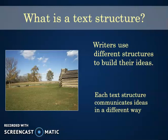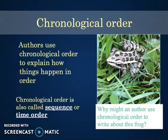Our first text structure is called chronological order. Another way to remember this is sequence. On a clock it starts at 12 and then goes 1, 2, 3, and so on — that's going in chronological order. If you look at a calendar, the first day of the month always starts with 1 and goes until the end of the month, which is either going to be 28, 30, or 31. That's also chronological order or sequencing.